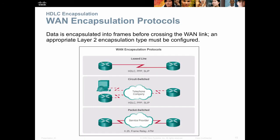WAN encapsulation protocols are the layer 2 protocols we use on the WAN. Common ones include HDLC, PPP, and SLIP. Others include X.25, Frame Relay, and ATM. Notice that circuit-switched and leased line share the same protocols. When we get to packet switching — the more modern way to connect — we need a new type of protocol for those more modern packet-switched connections.